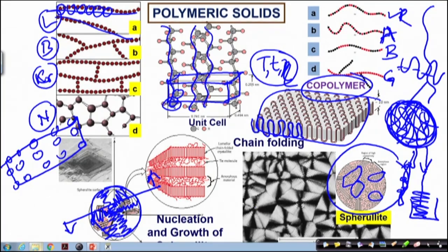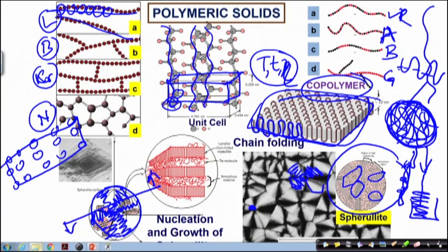This is a cartoon, whereas this is a real-time picture of such a chain-folded polymeric crystallite, wherein you can clearly see that maybe one particular region is where the chain folding started. One particular lamella formed like this, another lamella formed, another lamella formed. Essentially these are different chains radiating in different directions — this is a crystallite region, this is a crystallite region, and so on and so forth.